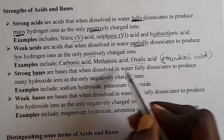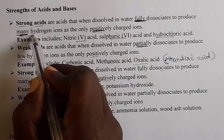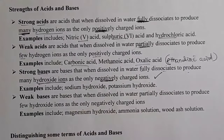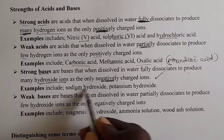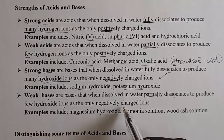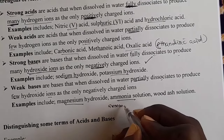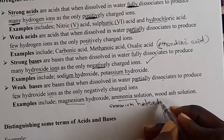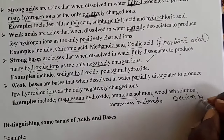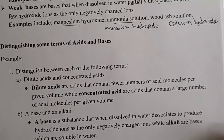Strong bases are bases that when dissolved in water fully dissociate to produce many hydroxide ions as the only negatively charged ions. Examples include sodium hydroxide and potassium hydroxide. Weak bases are bases that when dissolved in water partially dissociate to produce few hydroxide ions. Examples include magnesium hydroxide, ammonia solution (also called ammonium hydroxide), wood ash solution, and calcium hydroxide.